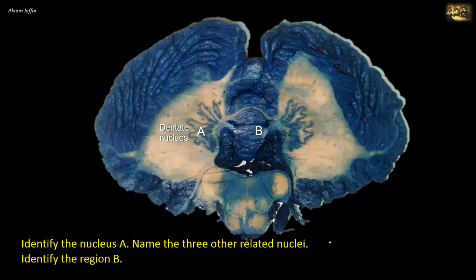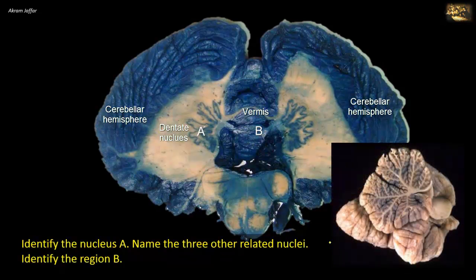B is the vermis. The vermis is the central region of the cerebellum, bounded bilaterally by the cerebellar hemispheres. Note the folia and sulci of the cerebellar cortex. The presence of these folia and sulci makes a section of the vermis look like a section of a tree. Hence the name Arbor vitae, meaning tree of life, is used to describe the appearance of the vermis in a mid-sagittal section.